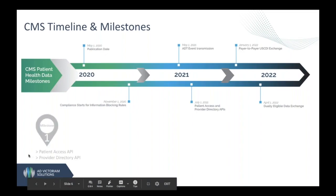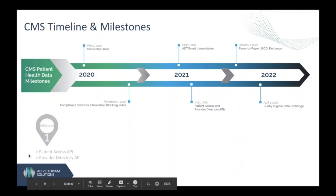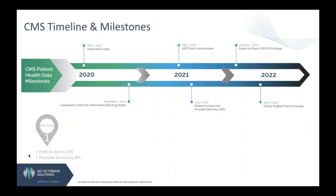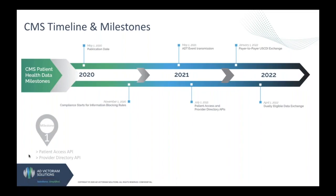You might notice that Milestone 1, which is the Patient Access and Provider Directory APIs, comes after Milestone 2 on the timeline. This is because the actual compliance date for Milestone 1 is January 1, 2021, but due to COVID, they've already pushed the enforcement of this milestone back to July.